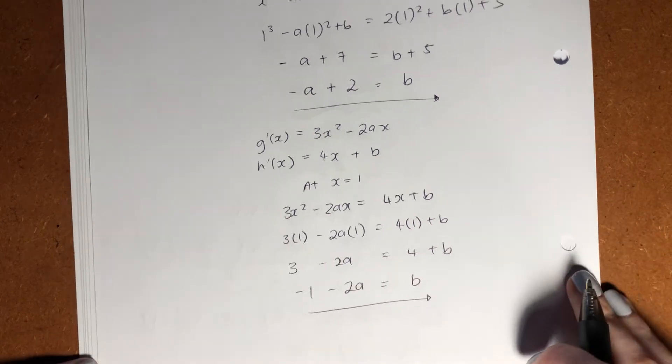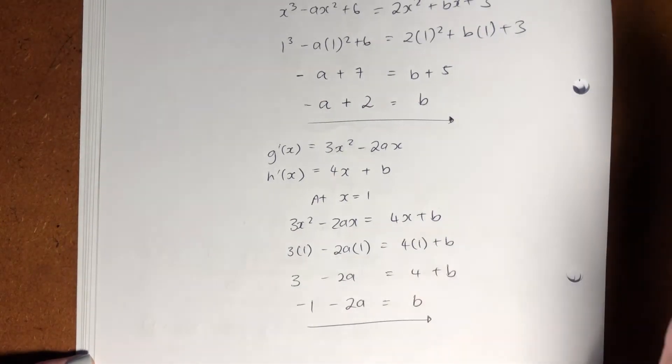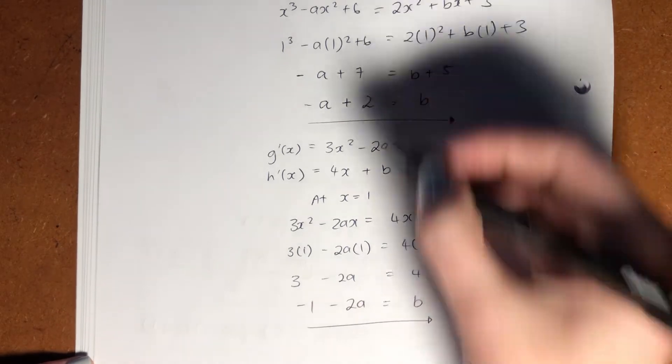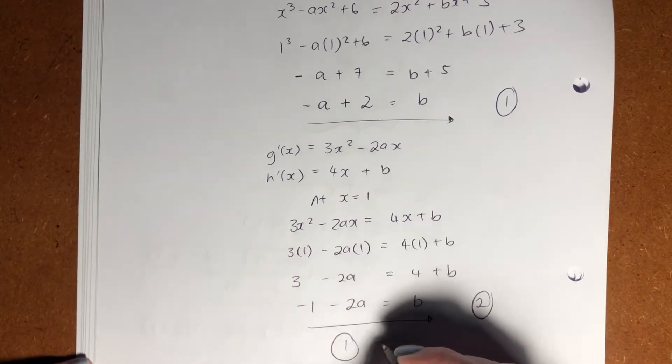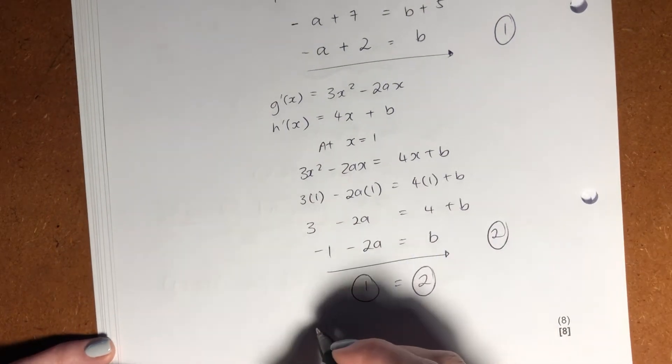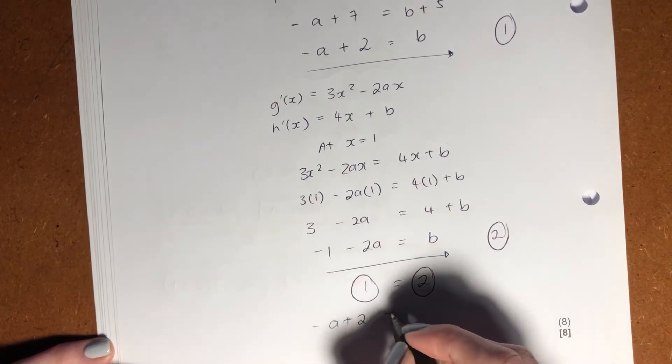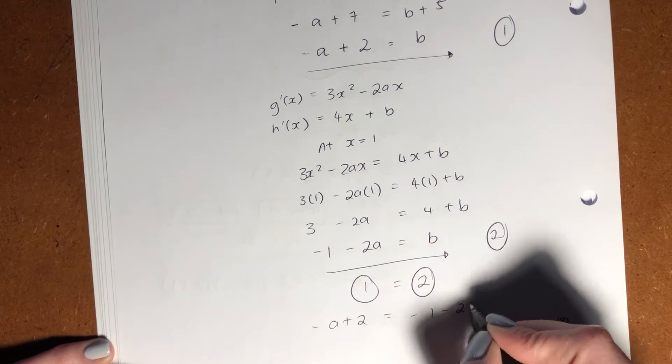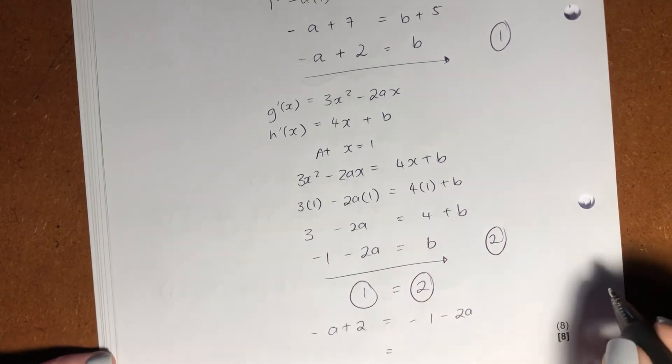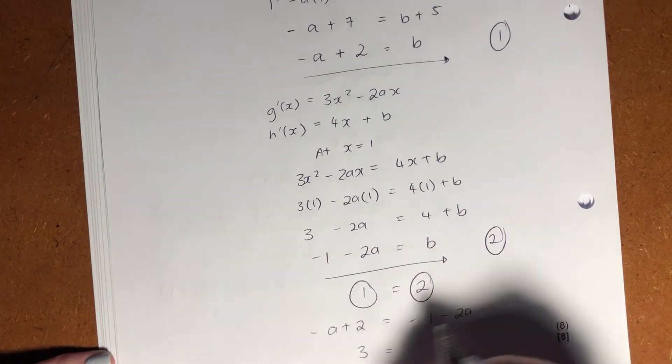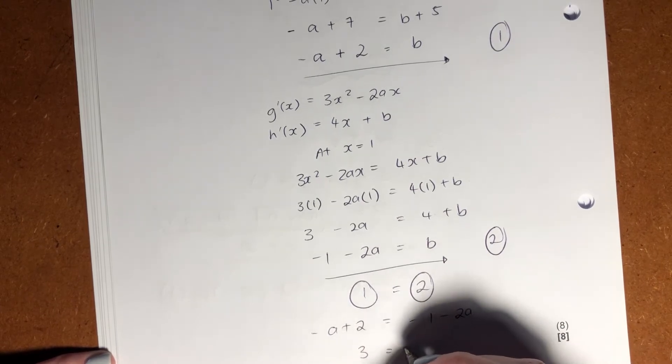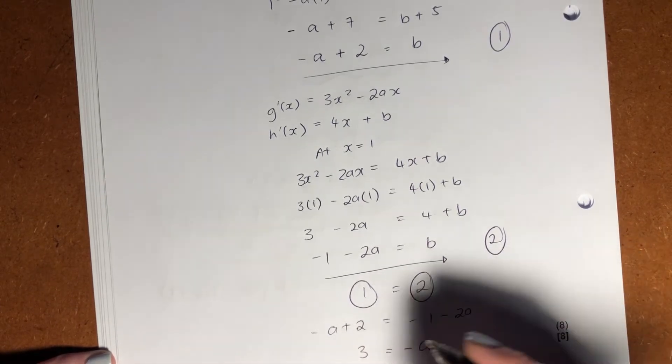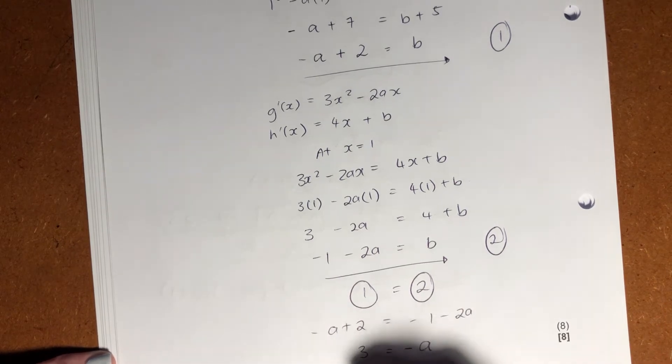So now we have two equations and we have two unknowns. That's fantastic. Let's equate them. Okay. So making 1 equal to 2 because they're both in terms of b. So negative a plus 2 equals negative 1 minus 2a. Bring that over. That becomes 3. Bring that over. That becomes minus a. And a equals negative 3.